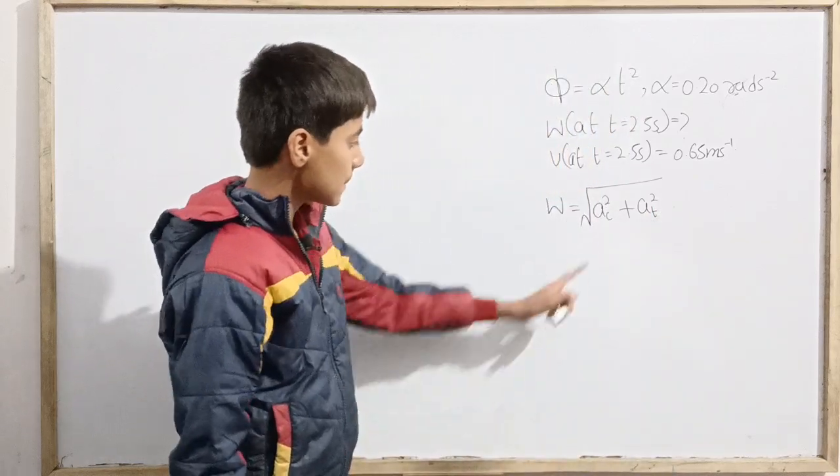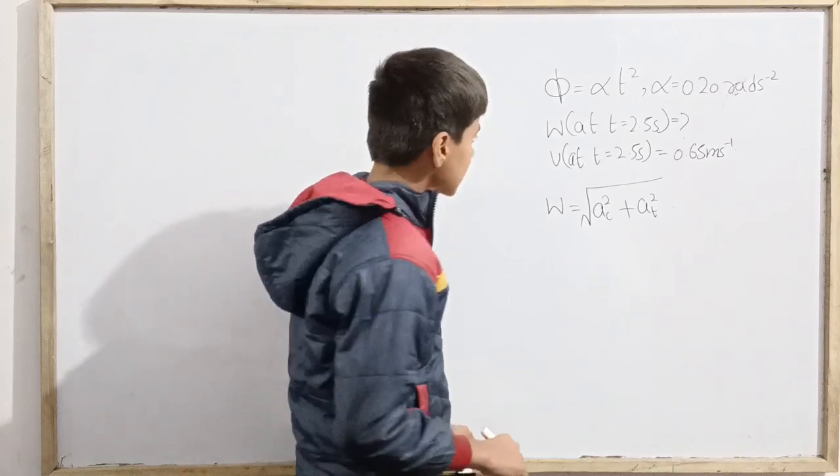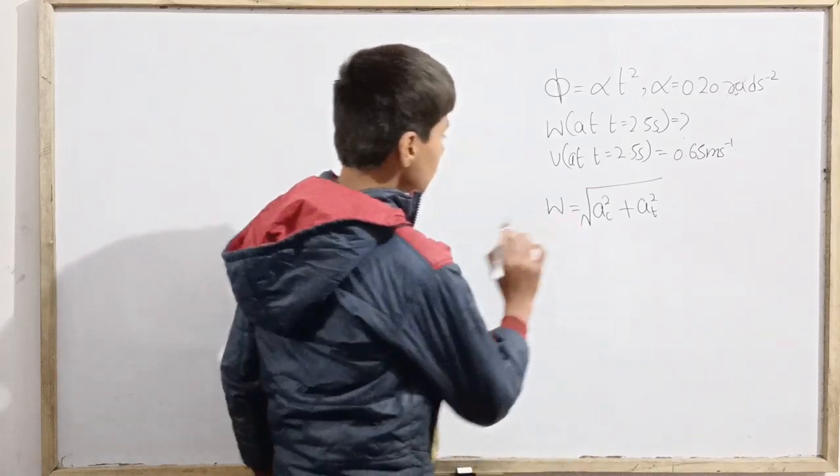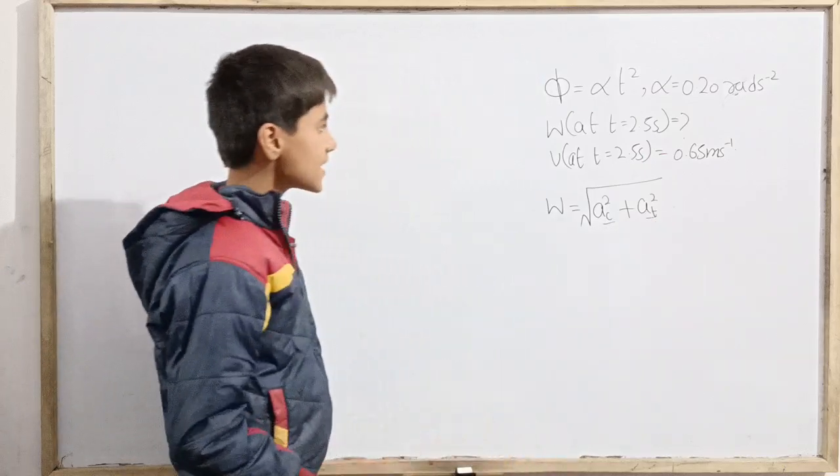Right, here we can write as the radial acceleration, that is radial acceleration and centripetal acceleration. Here we have to write as the same thing. So if I want to write as radial acceleration and tangential acceleration separately.